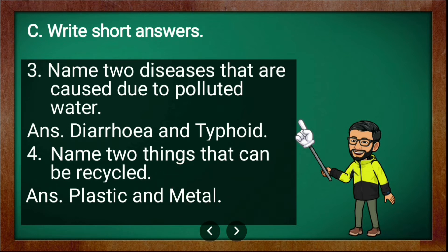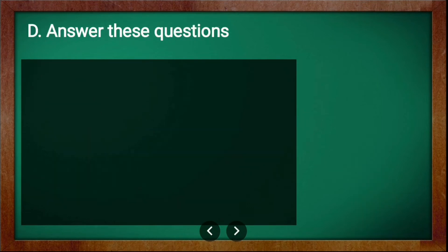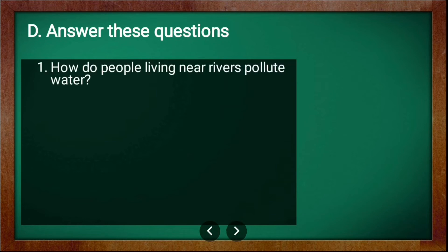Fourth short answer question: name two things that can be recycled. The answer is plastic and metal. These are the two things that can be recycled.